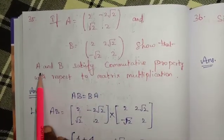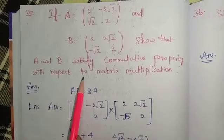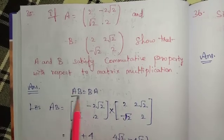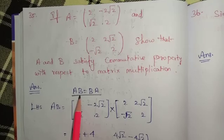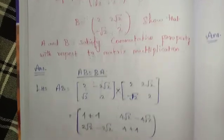Show that A and B satisfy commutative property with respect to matrix multiplication. Now, AB is equal to BA. So, A and B also multiply, this is what we need to show.